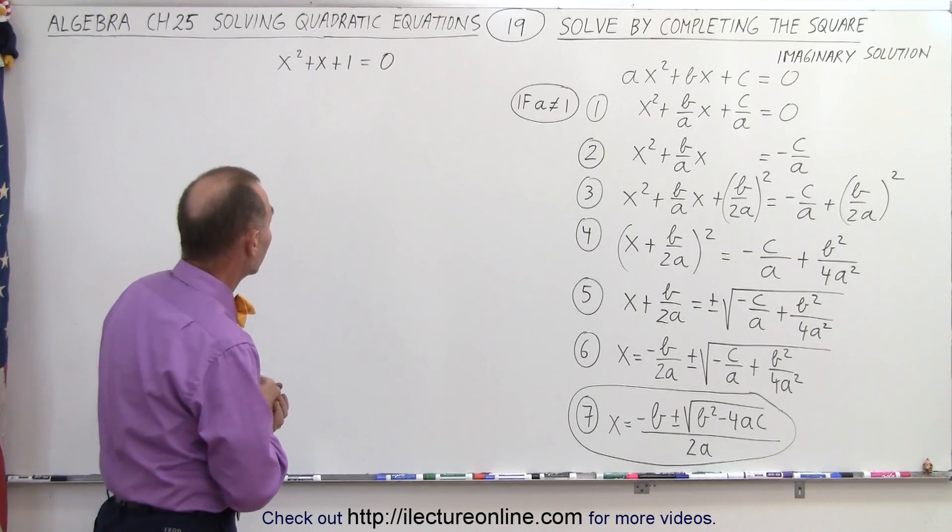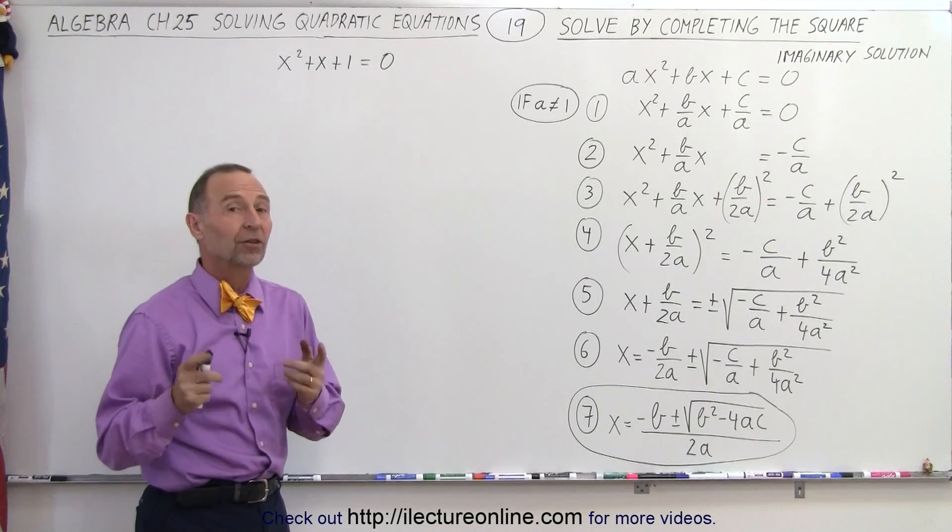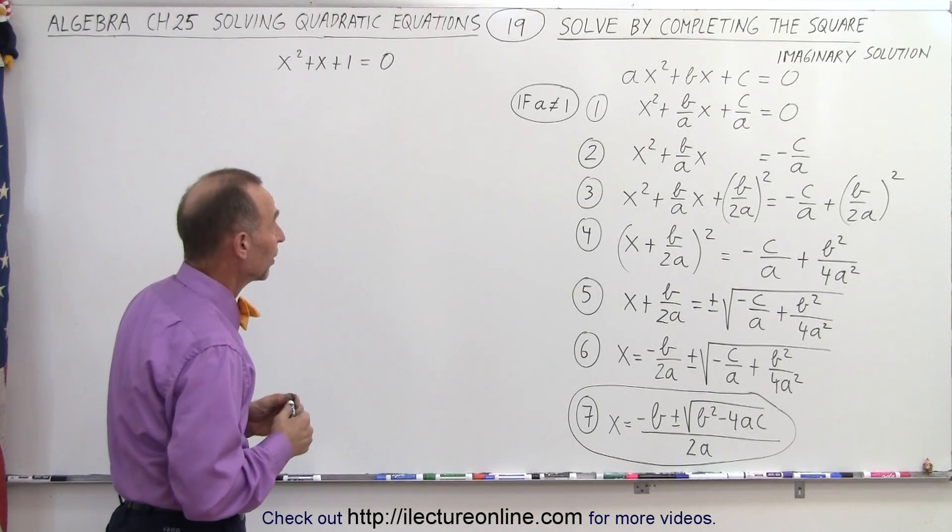Here we have x squared plus x plus 1 equals 0, so let's try to solve that by using the completing the square method.